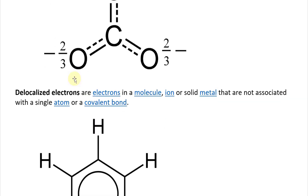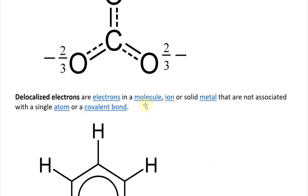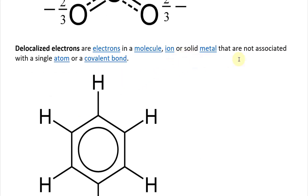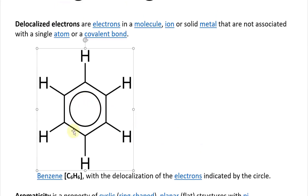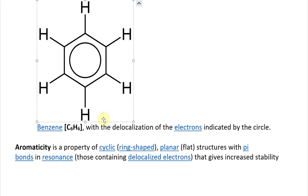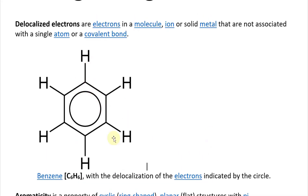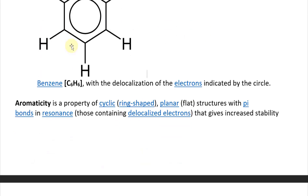Delocalized electrons are electrons in a molecule, ion, or solid metal that are not associated with a single atom or a covalent bond. For example, in benzene C6H6, the delocalization of electrons is indicated by a circle — the electron keeps circling around and could be found on any one of the atoms.